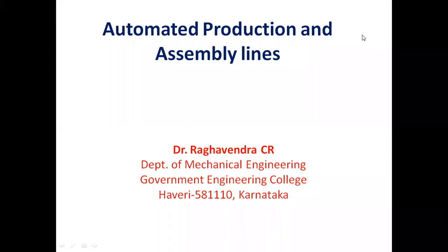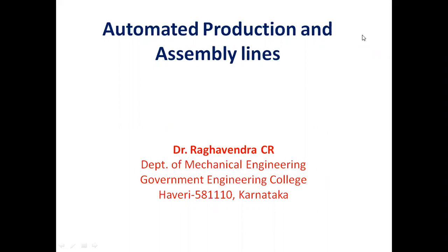Other examples of programmable automation include NC machine tools and industrial robots. Robots come under the category of programmable automation, and we have covered their definitions in previous classes.